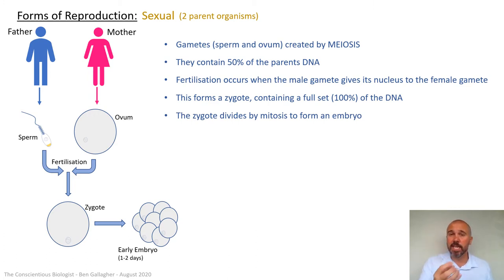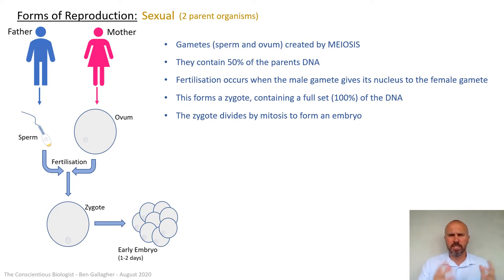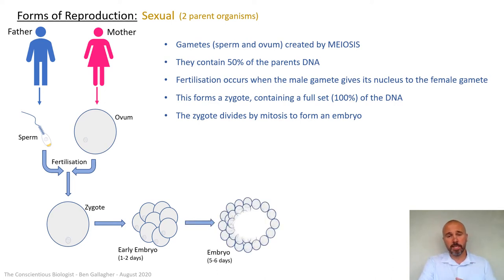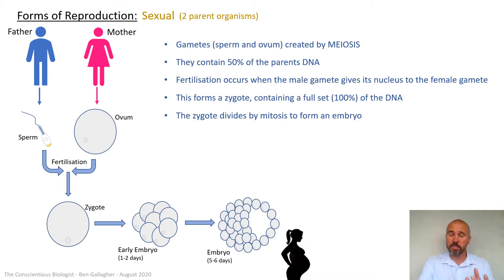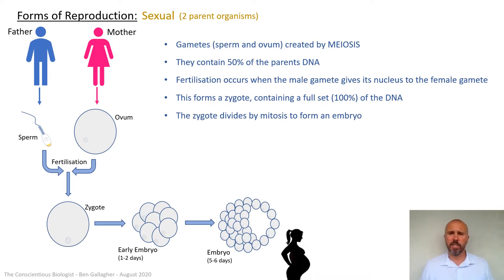At the embryo stage, the cells are undifferentiated — go back and watch the video on cell differentiation and stem cells if you don't know what that means; that's way back in the cell biology playlist. After a couple of days, those cells are going to start to specialize, start to differentiate, pick which bits of DNA are useful to them, and they'll form a more organized embryo.